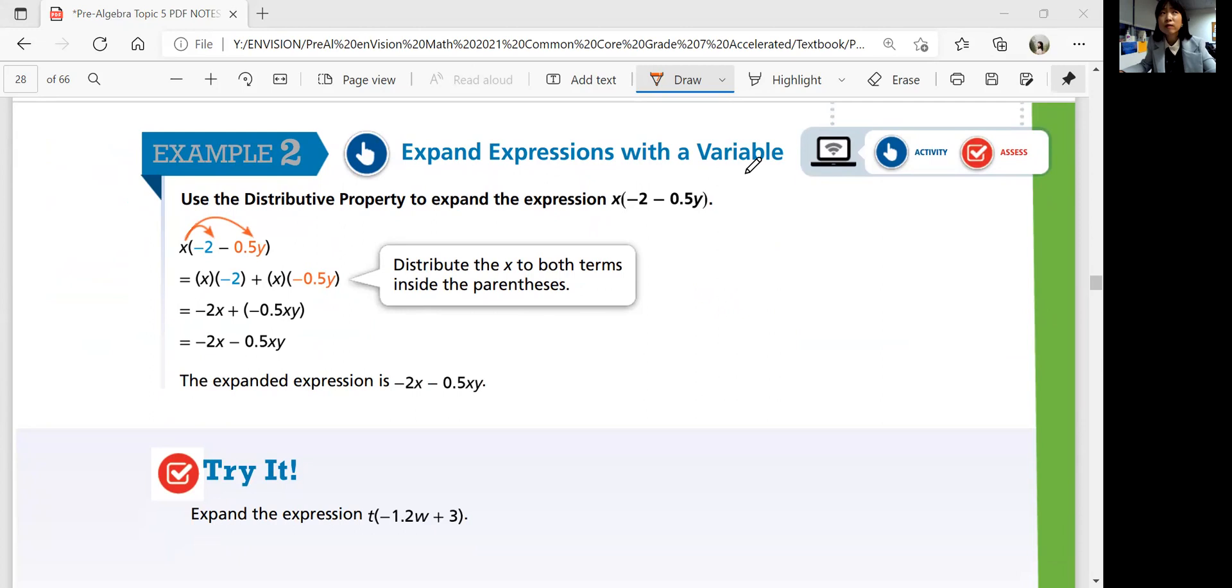So if we have two different variables, that's okay. You can still use the distributive property and simplify if we can. But what if, what happens when we multiply x and y together? What happens? What's x times y?